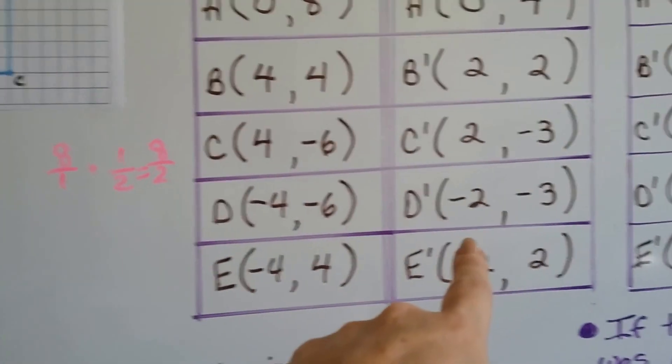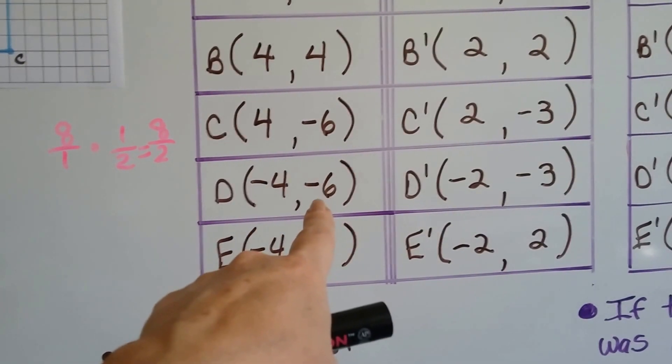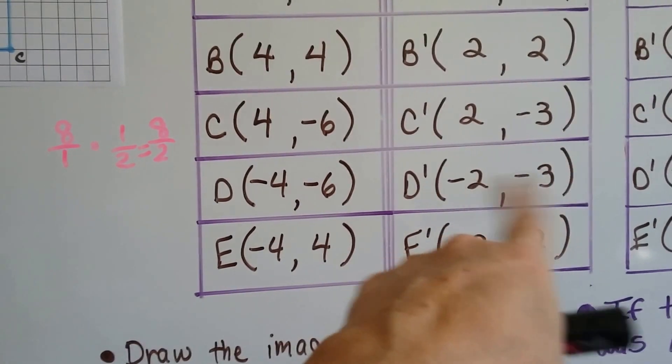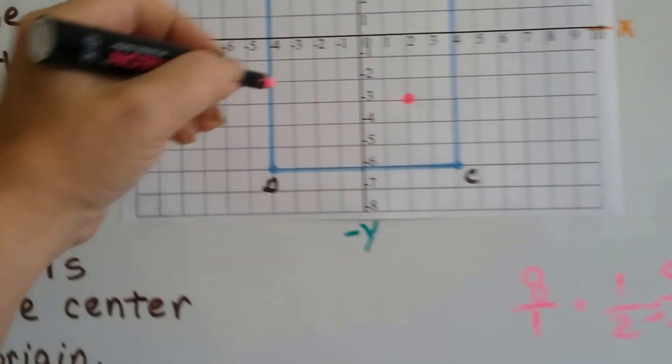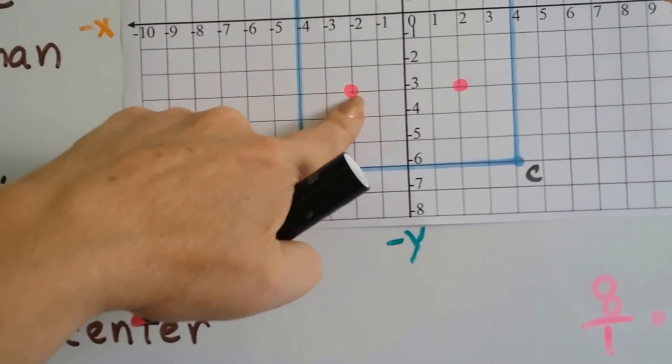And d prime is going to be negative 2, negative 3. Because half of negative 4 is negative 2 and half of negative 6 is negative 3. So we've got negative 2, negative 3 for d prime. And that's going to be right here. Negative 2, negative 3.